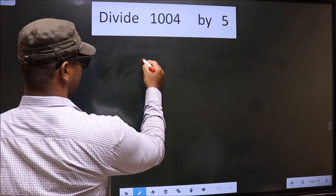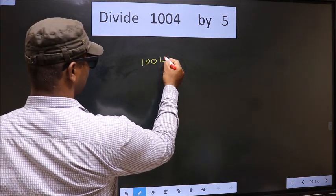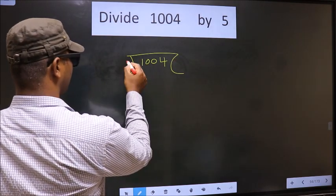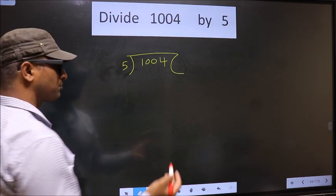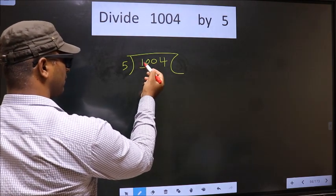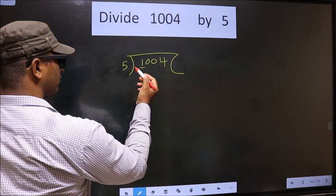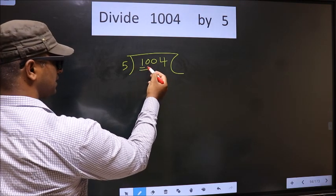That is 1004, 5 here. Now here we have 1. 1 is smaller than 5, so we take two numbers. That is 10.